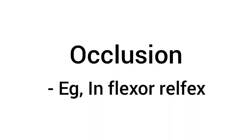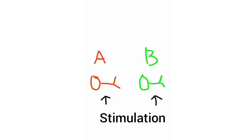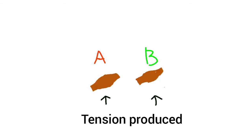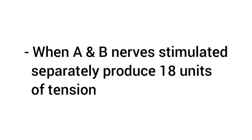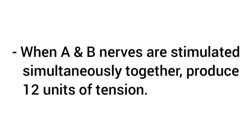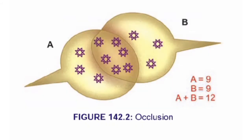Now, Occlusion. It is explained using the flexor reflex. When two nerves are stimulated simultaneously, the tension produced by the muscle is less than the sum of each nerve when stimulated separately. For example, consider nerve A has 9 units of tension and nerve B has 9 units of tension. When stimulated separately they produce 18 units of tension, but when stimulated simultaneously together they can only produce 12 units of tension. This explains the occlusion phenomenon.